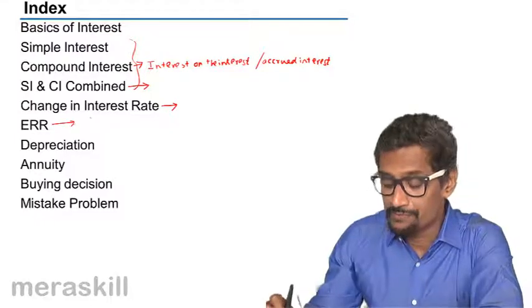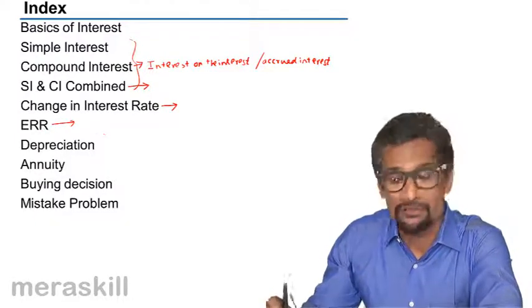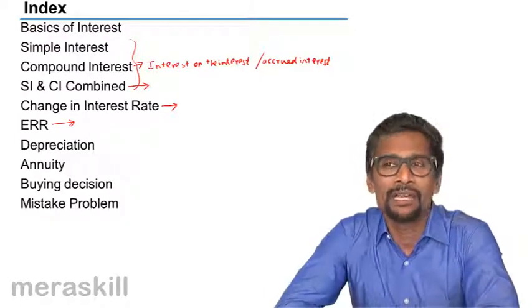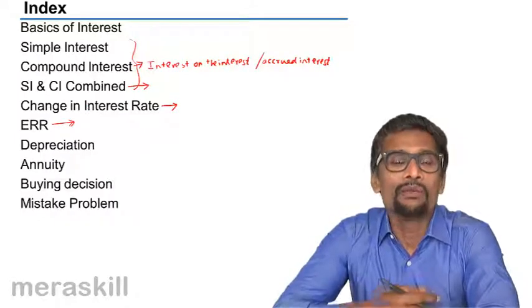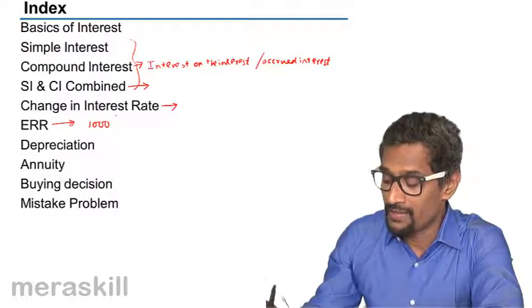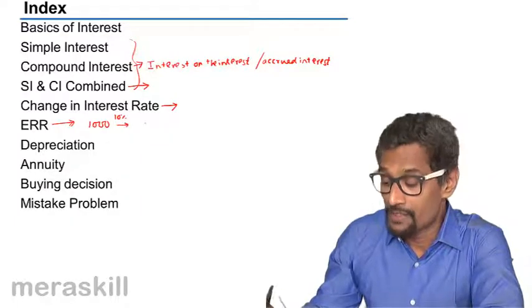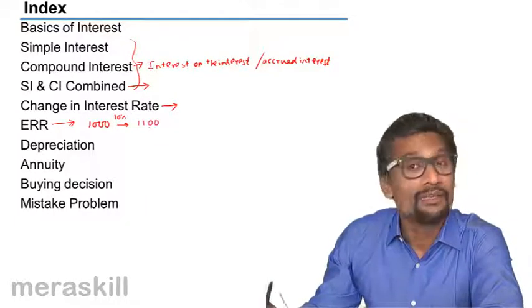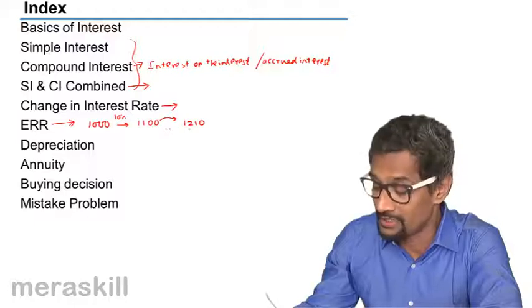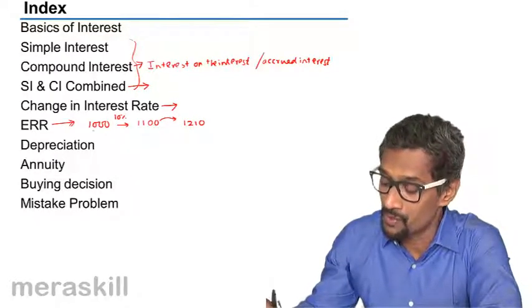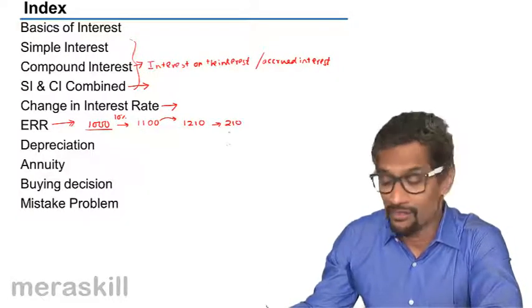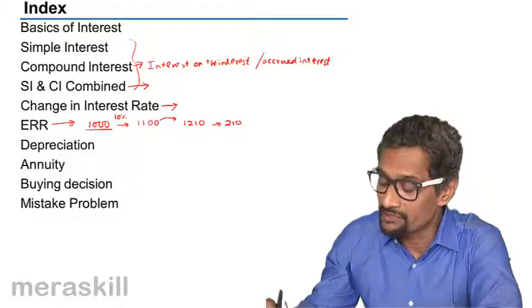Then we have effective rate of interest, which is what is the effective rate of interest. This would cover specifically a situation of compound interest wherein over a period of time since there is interest on interest. Suppose you have 1000 rupees, then at 10% interest, at the end of first year you will have 1100 as the amount. This becomes the principal for the next year, hence for the second year it becomes 1210 at the end of second year. So eventually the net interest is 210, so you have to see what is 210 with respect to this.